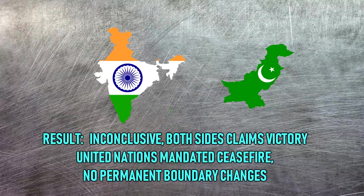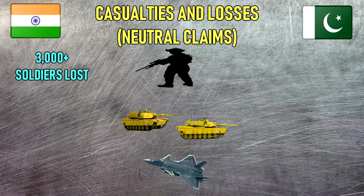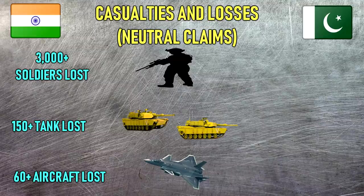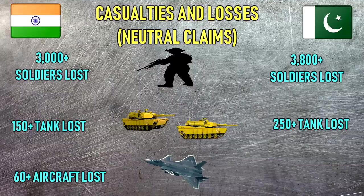Hostilities between the two countries ended after a United Nations mandated ceasefire was declared. Result: inconclusive — both sides claim victory, UN mandated ceasefire, no permanent boundary change. Casualties and losses (neutral claims): India — 3,000 plus soldiers killed, 150 plus tanks lost, 60 plus aircraft lost; Pakistan — 3,800 plus soldiers killed, 250 plus tanks lost, 20 aircraft lost.